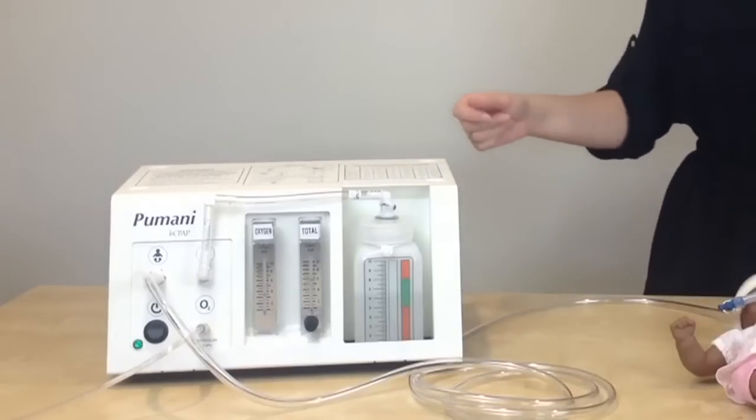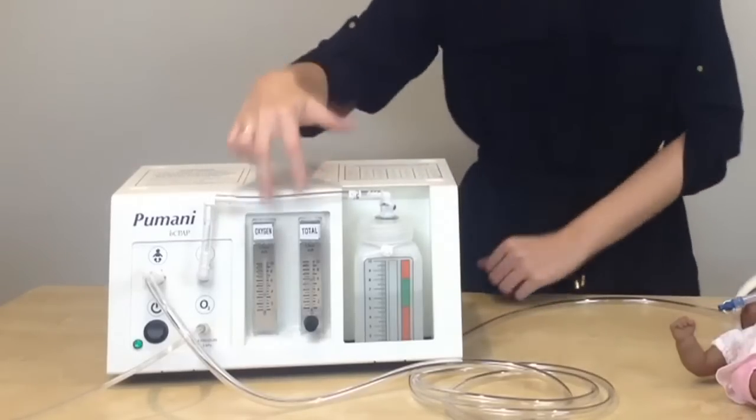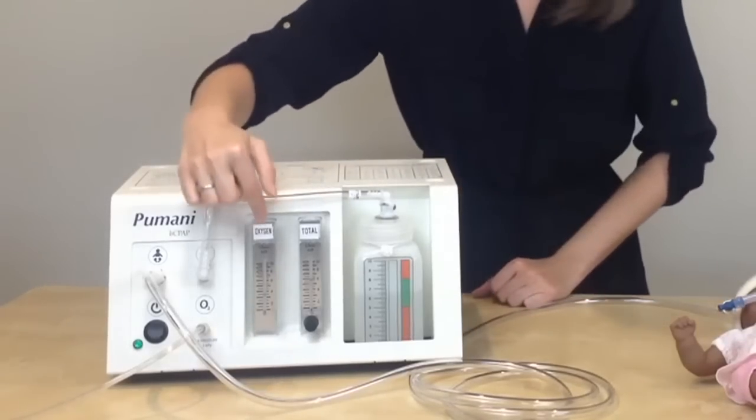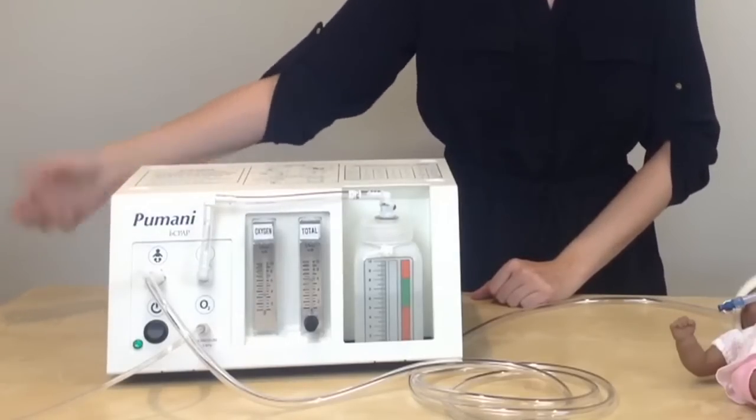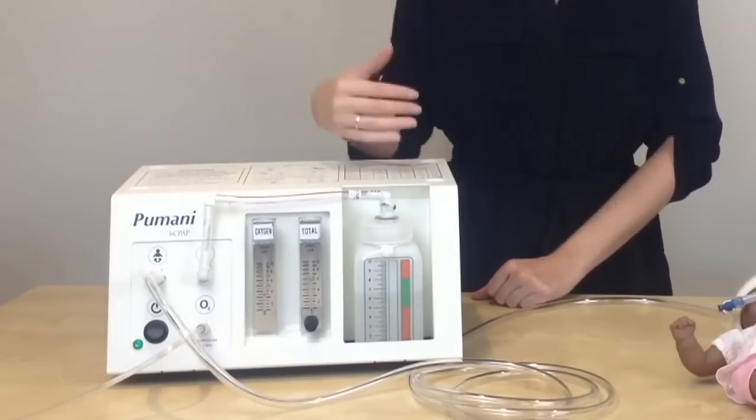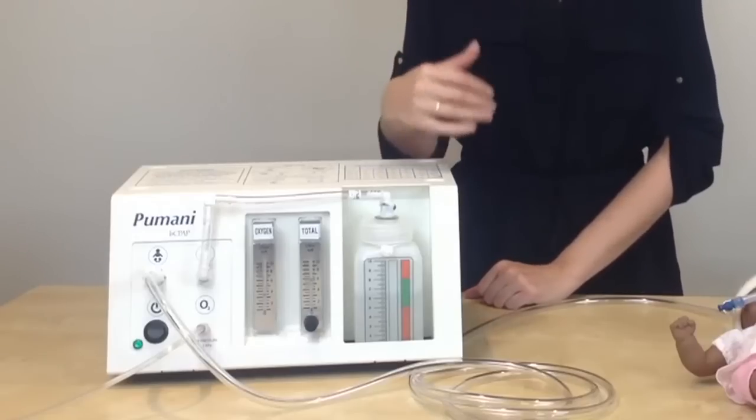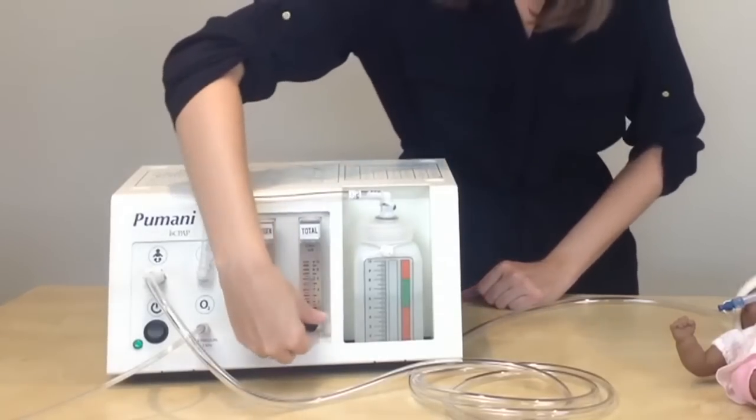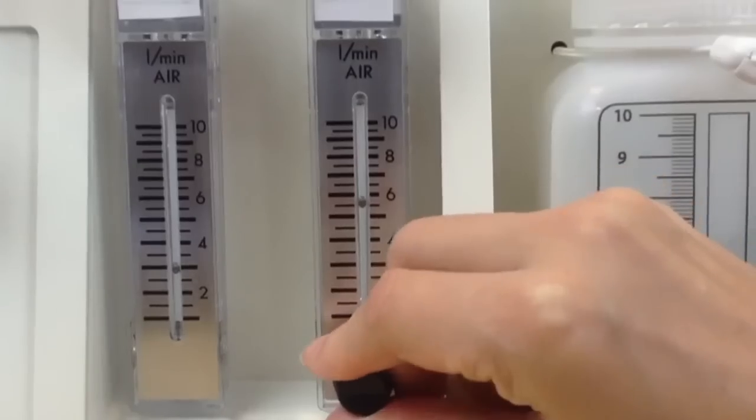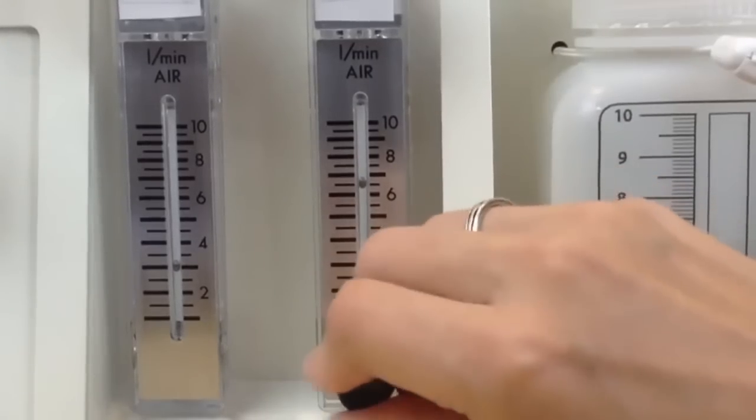If you would like to adjust the flow, you will need to adjust the oxygen flow on the oxygen tank or the concentrator if you need to increase or decrease the oxygen level depending on the oxygen saturation of the patient. If you want to adjust the total flow, you will turn the knob to either increase or decrease the total flow.